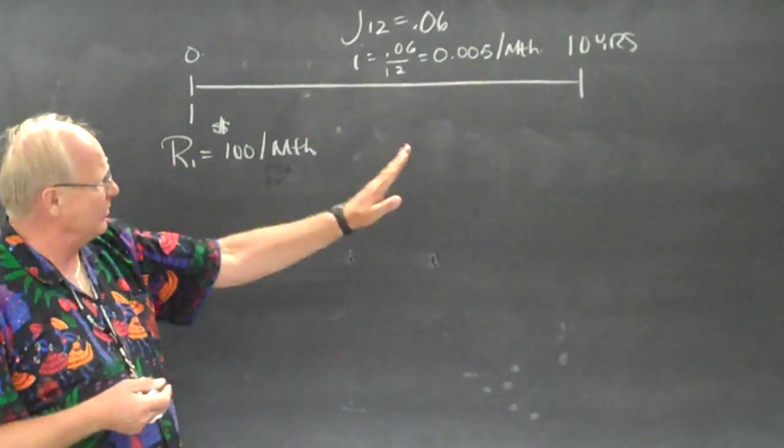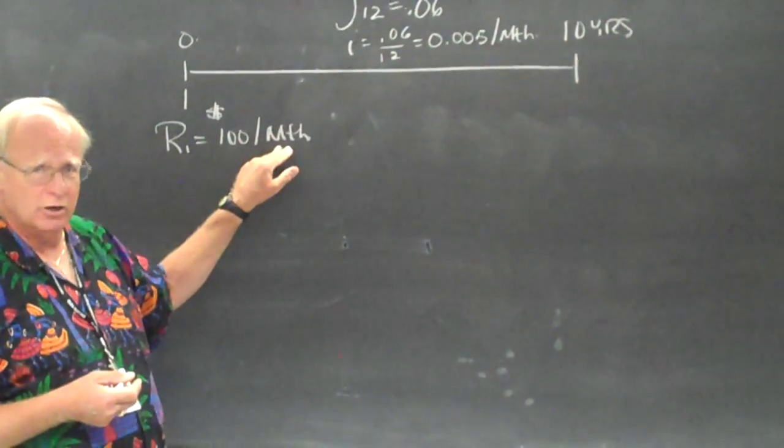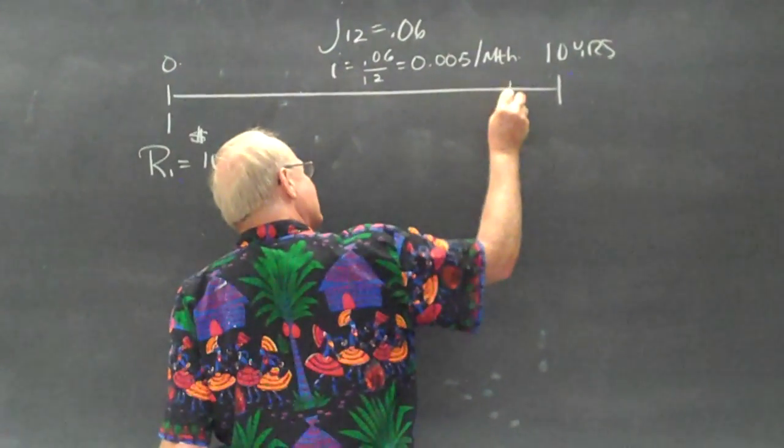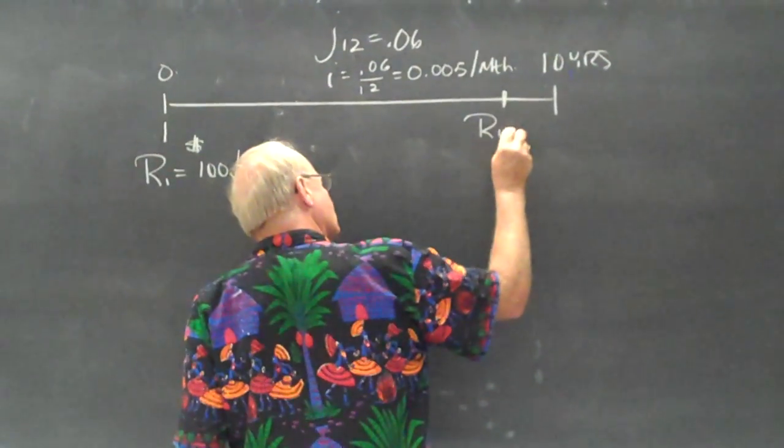Now to calculate N, the number of payments, there are 12 per year for 10 years, which will be 120. Notice the last one's at the beginning of the last month, so that's R120.